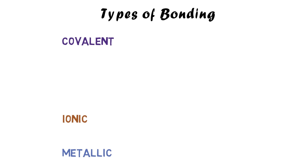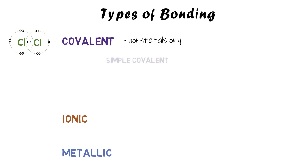Covalent bonding occurs when atoms share electrons, so their outer shells overlap and they share a pair of electrons. This only happens in non-metals, so metals are never involved in covalent bonding. There are two types of covalent bonding: simple covalent, which is small molecules like CH4, H2O, CO2 with just a few atoms in them.